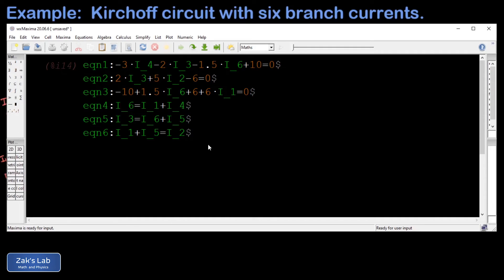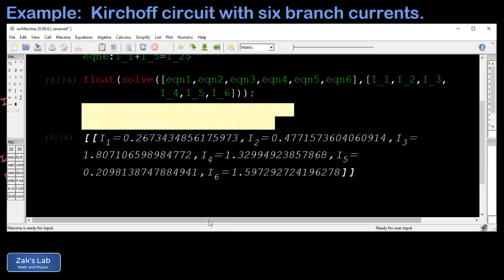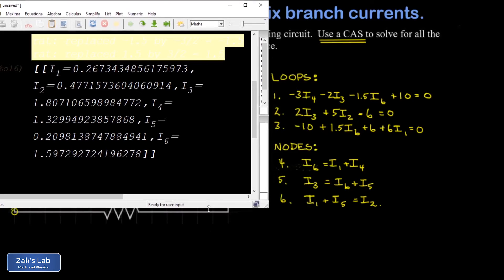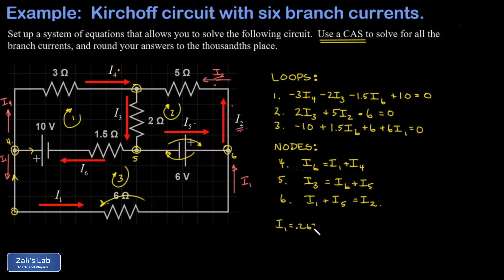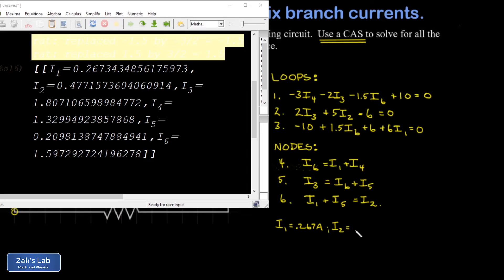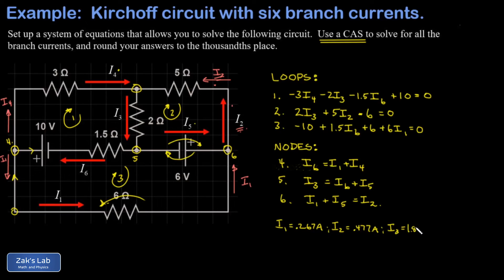And now we can get into solving the system. So what I want in the end is decimal approximations for all six of the branch currents. So I'm going to start by using the word float, which tells Maxima to give us a floating decimal point answer instead of an algebraic answer. Then we're going to solve the system with the solve command. And we just put in brackets the name of the equations we want to solve. And then we put in brackets the names of the variables we want to solve for. And we're going to hit shift enter. And when I do this, the decimal approximations are all going to pop out. And I'll go ahead and write these all down to the thousandths place. I1 is 0.267 amps. I2 is 0.477 amps. I3 is 1.807 amps. And so on.